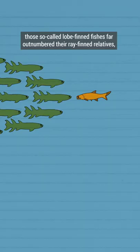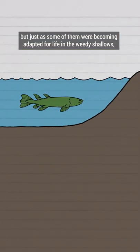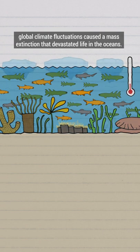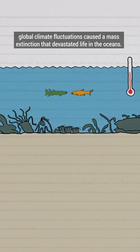At first, those so-called lobe-finned fishes far outnumbered their ray-finned relatives. But just as some of them were becoming adapted for life in the weedy shallows, global climate fluctuations caused a mass extinction that devastated life in the oceans.